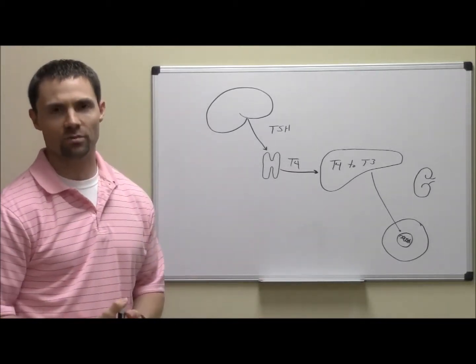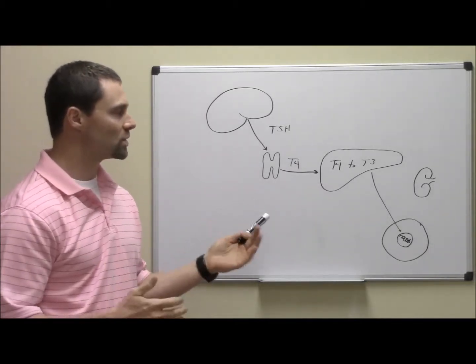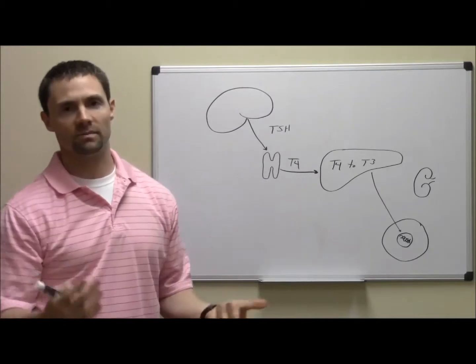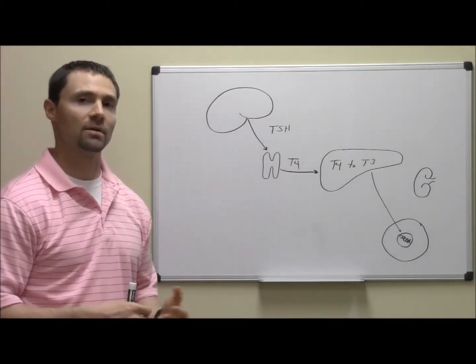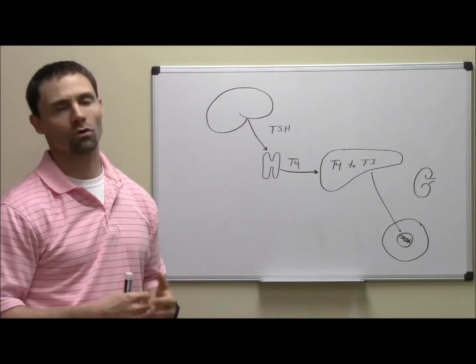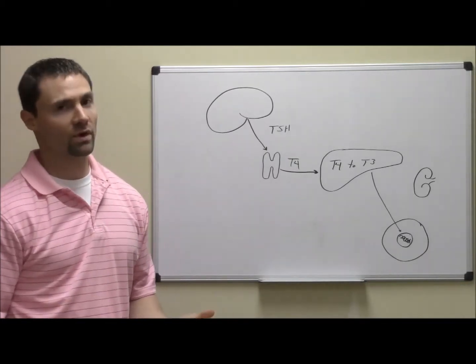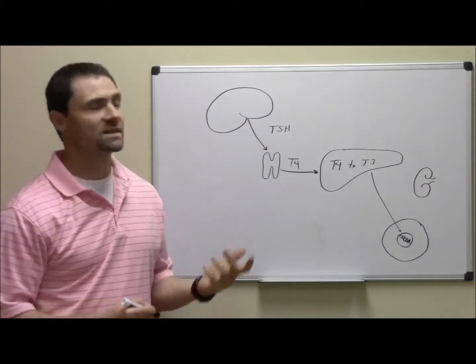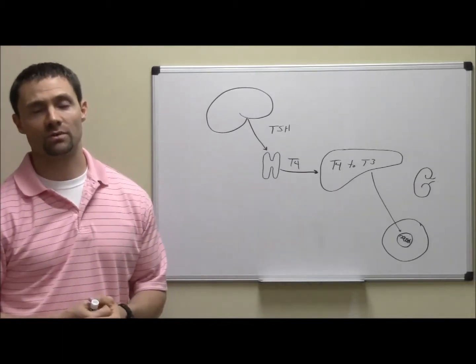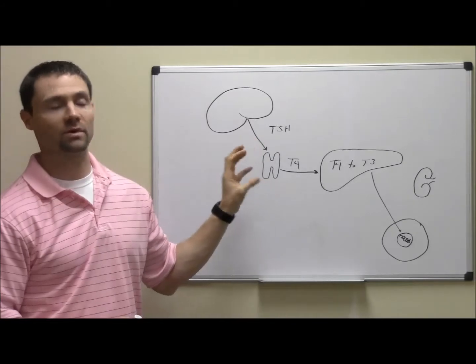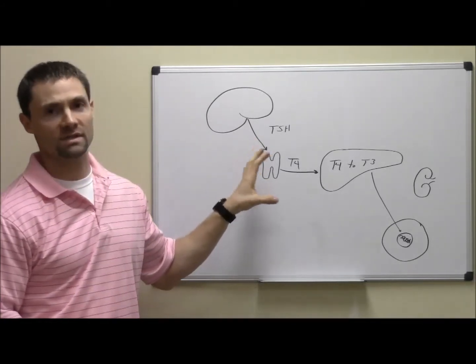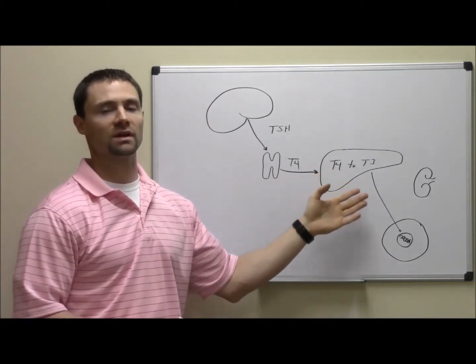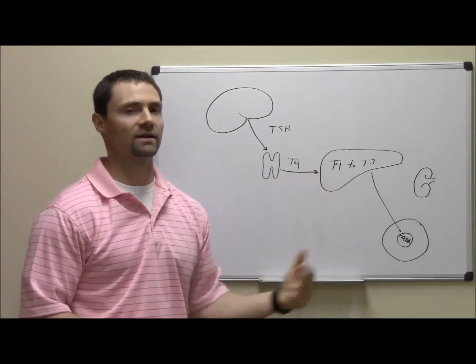But then once that T3 is available, that T3 can then go to the cell and begin to cause a reaction to take place, can speed up the metabolism and have those overall normal metabolic effects that we think about with thyroid function. Now when it comes to addressing any type of dysfunction associated with the thyroid, we don't want to think just at the thyroid gland, because it's not just about what's at the gland, it's about how that hormone produced from the gland is being converted and then ultimately how that conversion is interacting on the cell.